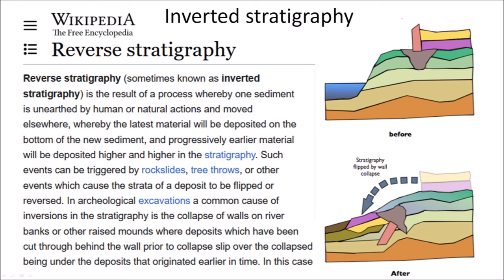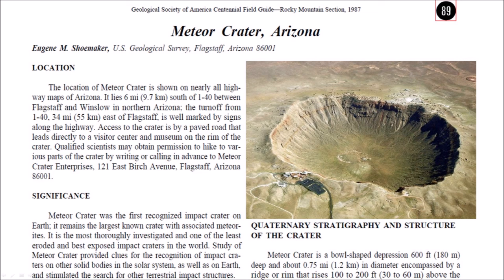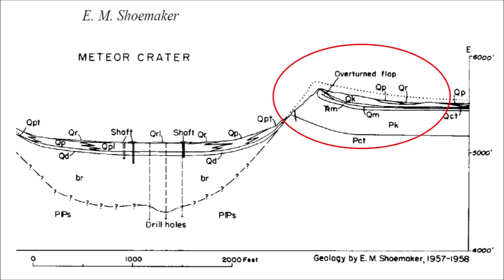The rims of impact craters also have inverted stratigraphy. This was shown by Eugene Shoemaker in his study of Meteor Crater in Arizona. This image by Eugene Shoemaker shows the overturned flap and the raised rim of Meteor Crater, which is a characteristic of all impact craters. Overturned flaps always have inverted stratigraphy.